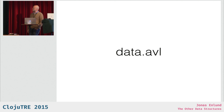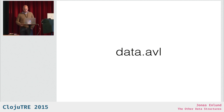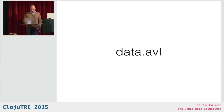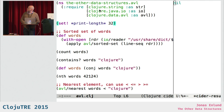That's rrb-vectors. Next, data.avl — these are sorted sets and sorted maps. Clojure has both sorted sets and maps, and these are similar, but with a few extra operations. Let me show you this live.